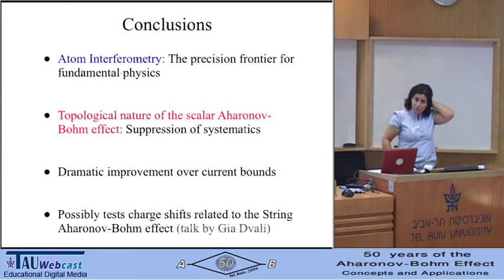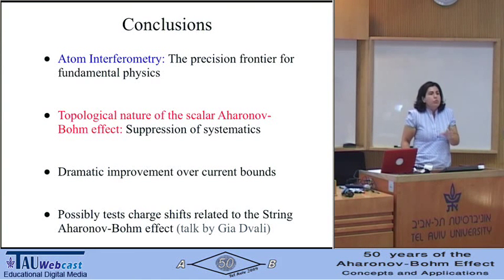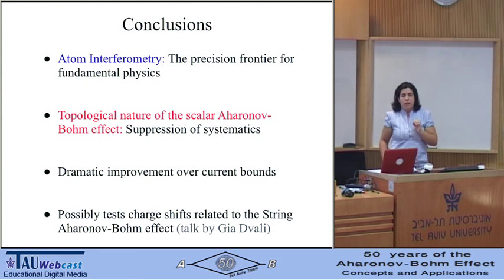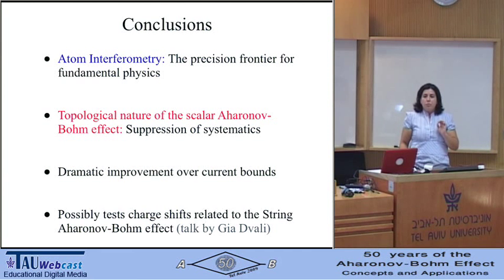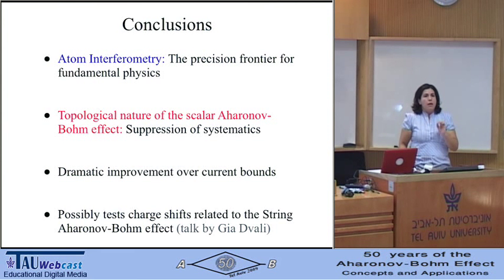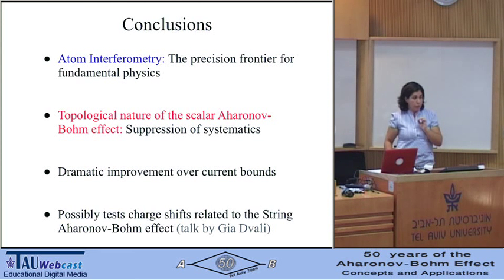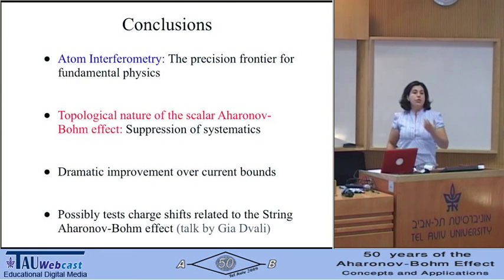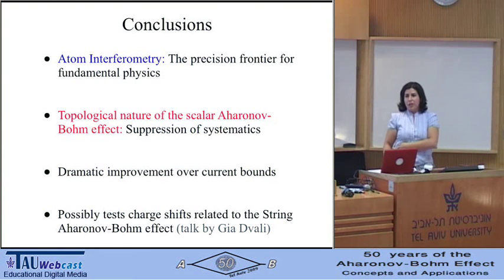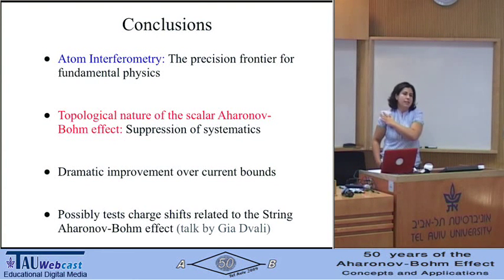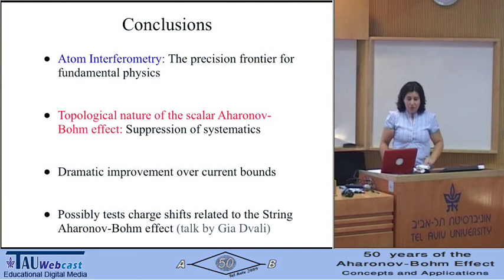To conclude: atom interferometry provides a powerful and sensitive tool to test fundamental physics. Combining it with the topological nature of the Aharonov-Bohm effect, I can very easily suppress systematics and get very high sensitivity — at least seven orders of magnitude improvement in current tests of charge quantization. This experiment could also possibly test charge shifts related to the string version of the Aharonov-Bohm effect. There are other theoretical possibilities I haven't covered, which you're welcome to ask about. Thank you very much.